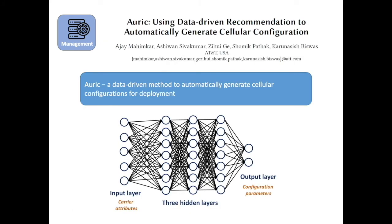So in the second paper, AURIC — Using Data-Driven Recommendation to Automatically Generate Cellular Configuration — Mahimkar and others explore the possibility of using a data-driven method to automatically generate the cellular configuration for deployment. This is a very interesting paper with data from the real world and experiences of interacting with operations teams. I would highly encourage you to attend the talk and read the paper for more details.